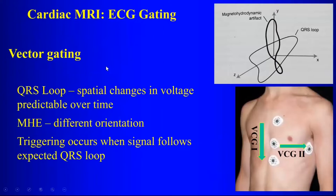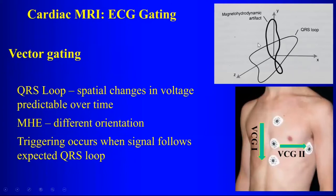What we use now is called vector gating. The magnetohydrodynamic effect has a certain orientation in space — along the y-axis, along the length of the body, because that's the way the aorta runs — as opposed to the changes in voltage from the heartbeat itself, which is oriented differently. The leads are set up differently for vector gating, with one set of leads in one orientation and the second set in another. The software can differentiate voltage changes from the heart's conduction system versus the magnetohydrodynamic effect using the spatial orientation of those changes.